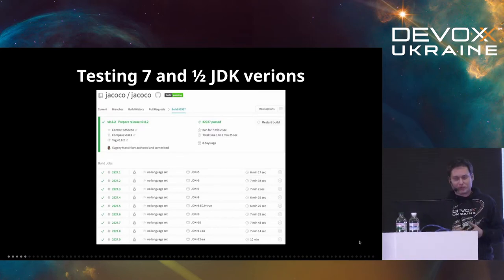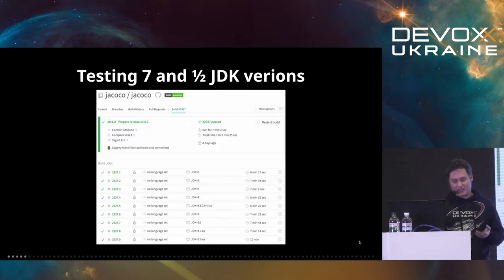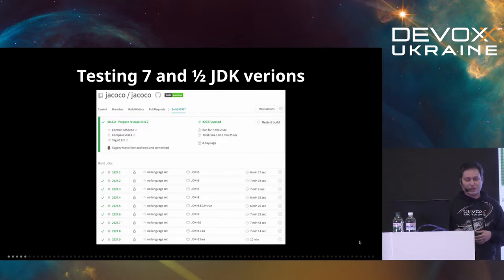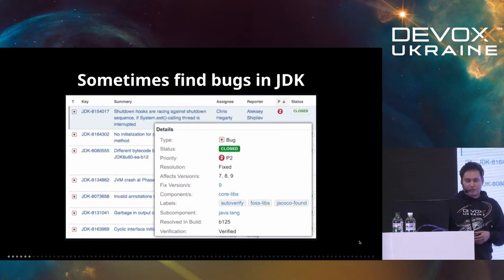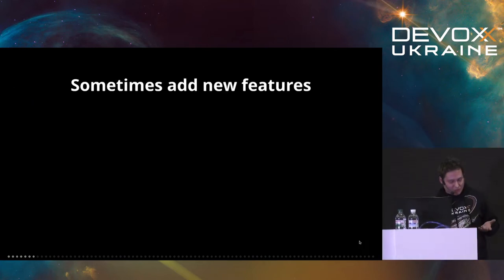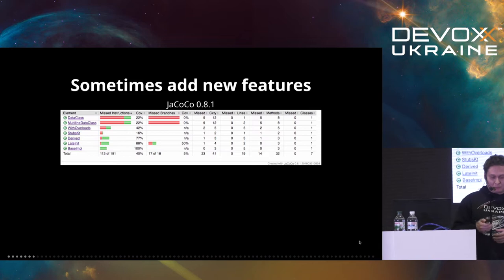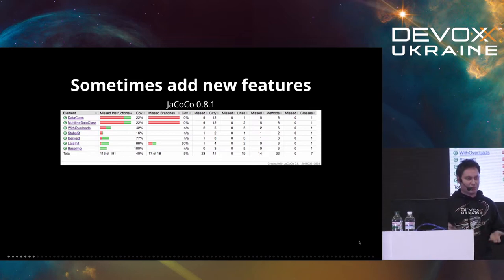During development of those projects, in particular JaCoCo, we do a lot of testing against different JDK versions — against seven and a half, half because we also test early access builds before they come out. We find quite some bugs. I would say that mostly we find bugs in the JDK, actually. Sometimes we even contribute patches back to them. Sometimes, of course, we also add new features to JaCoCo. One of such features that we recently added was filtering.